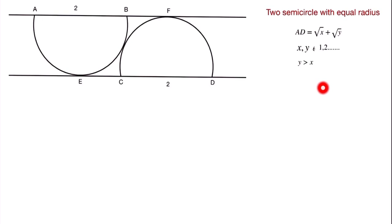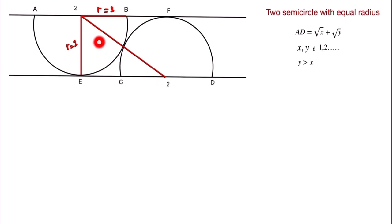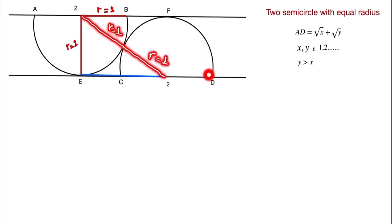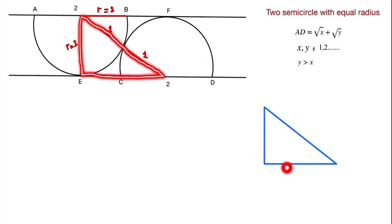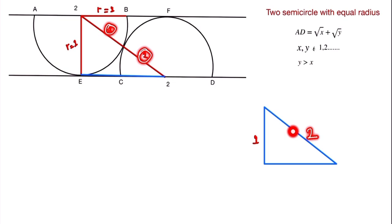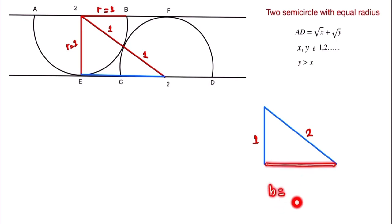The radius of each semicircle is 1. Let's join the centers and radii to form a triangle. This radius is 1, and this one is also 1. The total length across is 2, and the vertical radius is 1. Applying the Pythagorean theorem: b = √(2² − 1²) = √3. So the length from the base to the top point is √3.